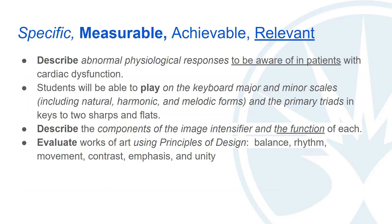The second example: 'Students will be able to play on the keyboard major and minor scales, including natural, harmonic, and melodic forms, the primary triads in keys to two sharps and flats.' We have a main verb, 'play' — students are actually doing something that can be measured and observed. It's quite specific, providing context about what they're playing and the instrument they're using, giving it helpful specificity.